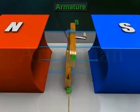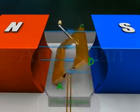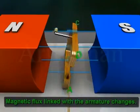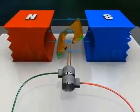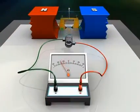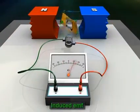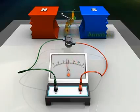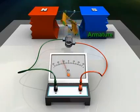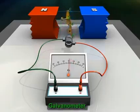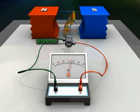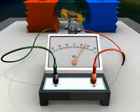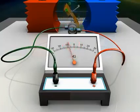Working of an AC generator: when the armature rotates between the poles of the field magnet, the magnetic flux linked with the armature changes continuously. As a result, an EMF is induced in the armature, which in turn produces an electric current through the armature, the galvanometer, the slip rings, and the brushes.